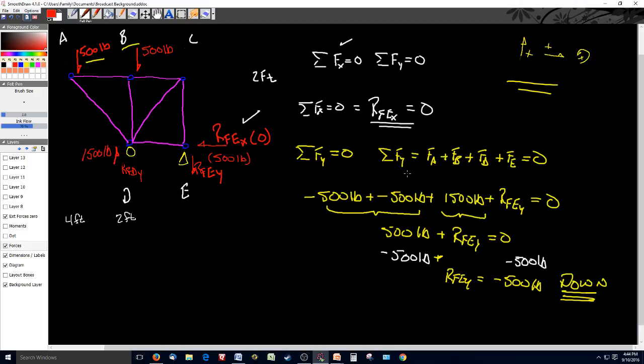So in the x direction sums to zero, the y direction sums to zero. And we solved those algebraic equations. We also saw what happens when we get a negative sign. It means that our initial assumption on the vector may not have been correct. So 500 pounds down at E.